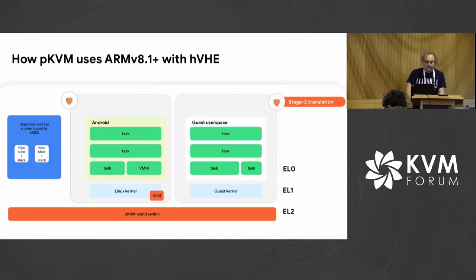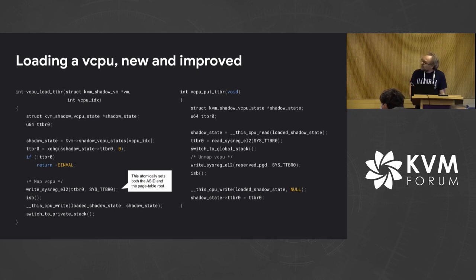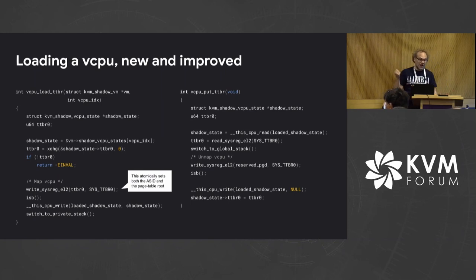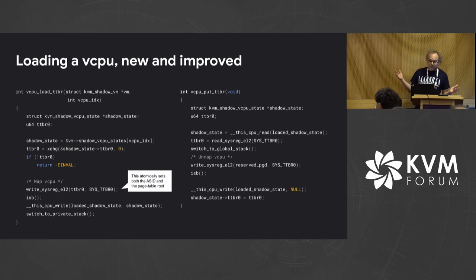Looking at the diagram, in that blue box we now have the vCPU state and its stack — that's our isolation context for the execution of this vCPU at EL2. In terms of code — I've condensed it a bit — it's basically about fetching the vCPU structure, finding the TTBR0 that contains the root of the page tables, performing some synchronization, and switching stack. This write to TTBR0 really sets both the ASID and the root of the page tables atomically — that's an important construct.